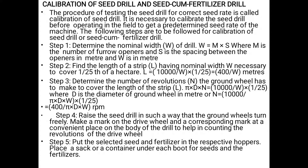Step 4: Raise the seed drill in such a way that the ground wheels turn freely. Make a mark on the drive wheel and a corresponding mark at a coincident place on the body of the drill to help in counting the revolutions of the drive wheel. Step 5: Put the selected seed and fertilizer in their respective hoppers. Place a sack or container under each boot for seed and fertilizer.